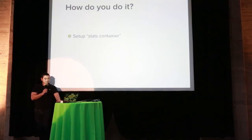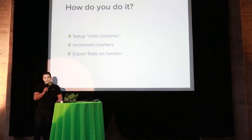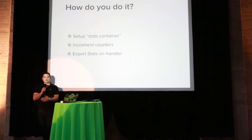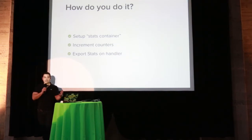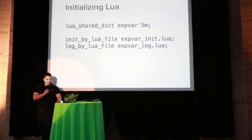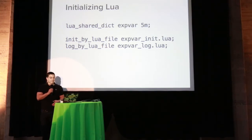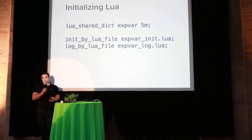Here's how you do it: you set up a stats container, increment counters, and export stats on a handler. We do this all via HTTP. All of our servers at Dropbox have an HTTP handler at the exact same location, export stats in the exact same way, aggregated through the same system, all put into a time series database. We have a generic front end that lets us drill down on stats and build dashboards. We wanted Nginx to look the same way.